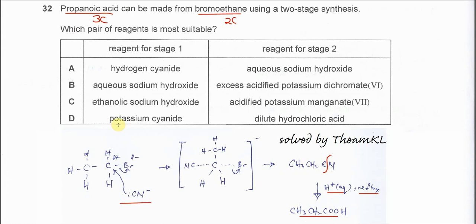We don't choose hydrogen cyanide. The first step must use the cyanide ion, so it's potassium cyanide. Stage two uses dilute acid with heat under reflux. The answer is D. That's all, thank you.